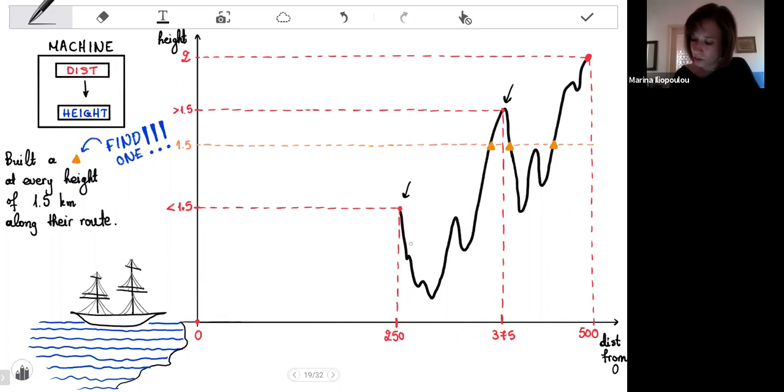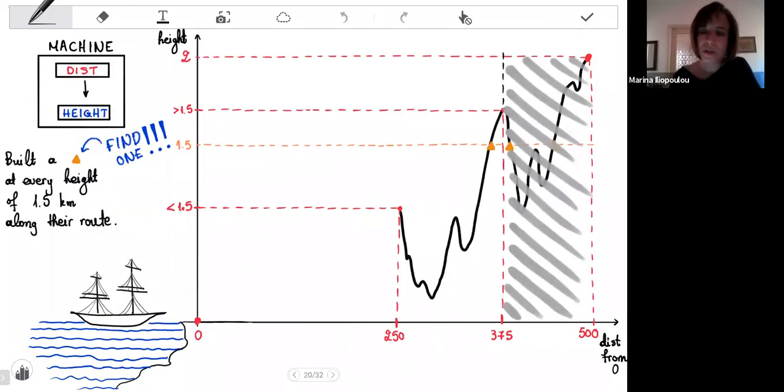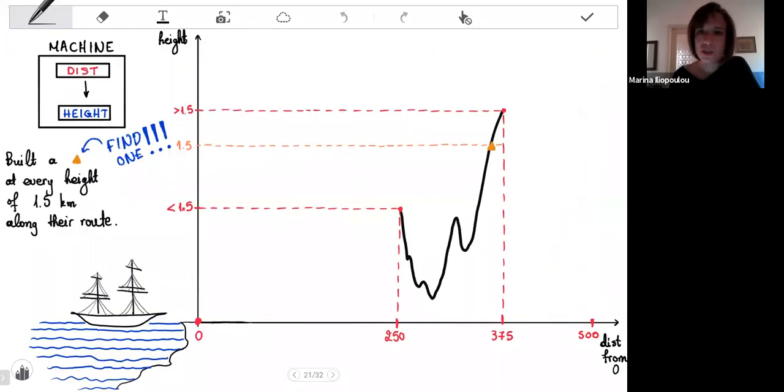Therefore, they know that in the meantime, in the first half of this route, they must have crossed height 1.5 kilometers. So they can completely ignore the second half of the route. The point is that there is definitely at least one shelter in the first half. They can focus on this much smaller part of the route and they can keep going.